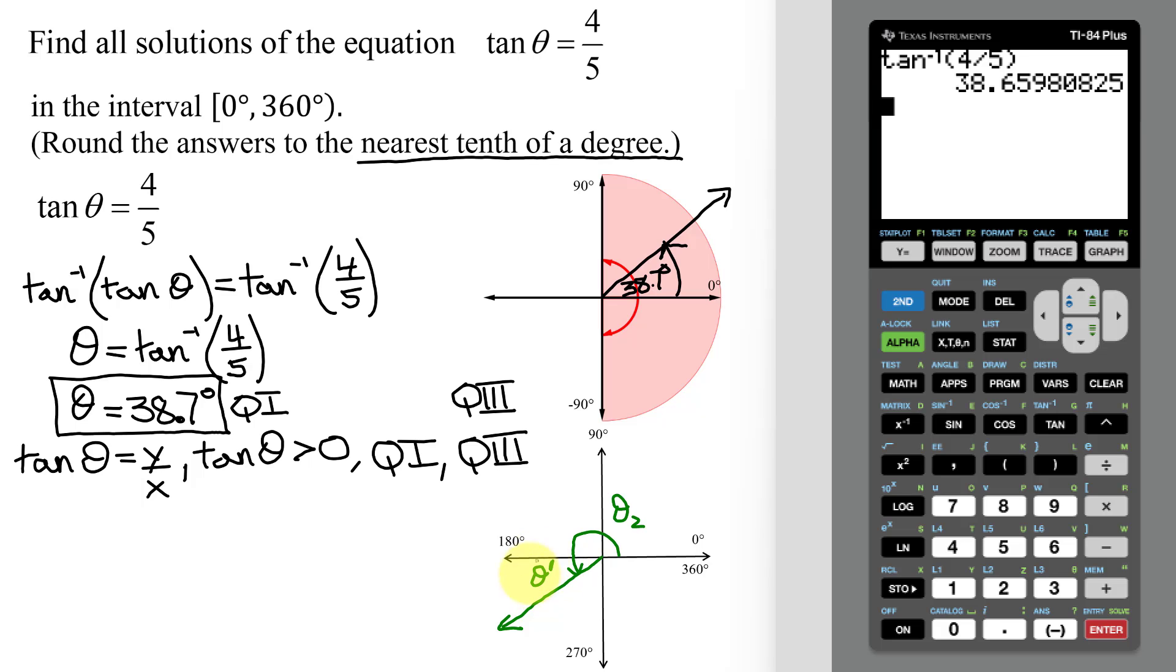Now the reference angle for this angle in quadrant three equals the reference angle for the angle in quadrant one. And remember, an angle in quadrant one is equal to its reference angle. These two reference angles are equal, so I know my reference angle equals 38.7 degrees.